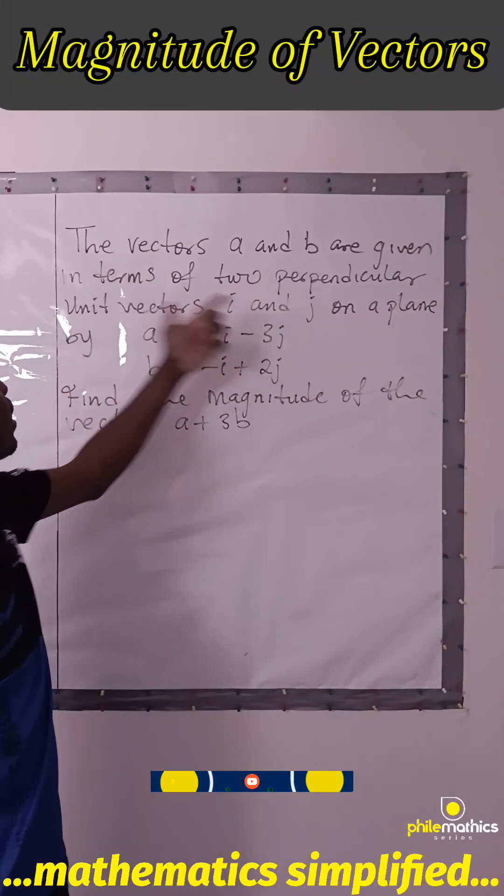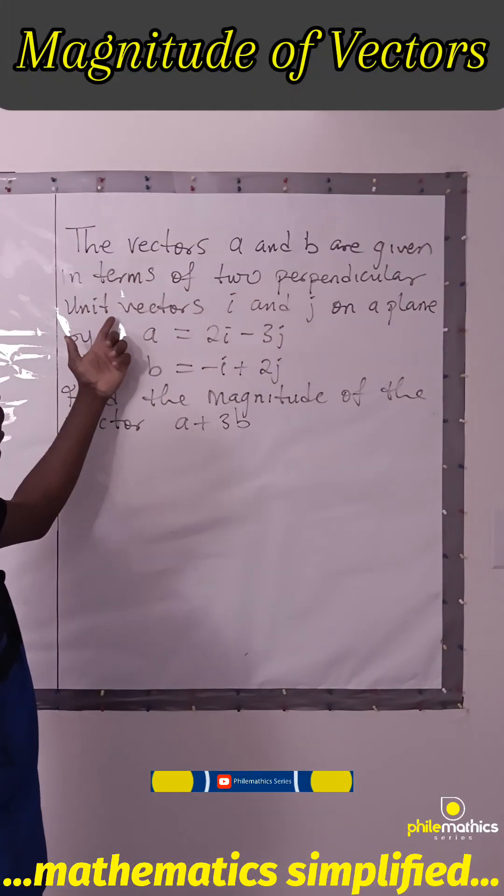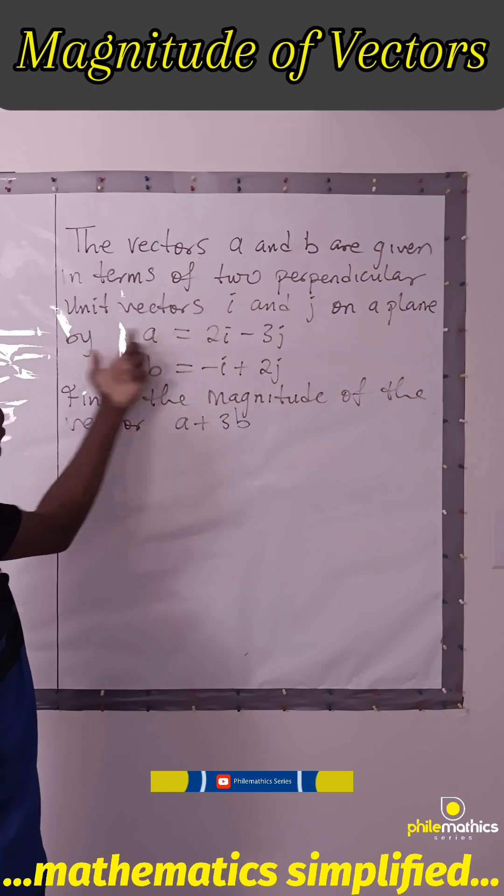The vectors A and B are given in terms of two perpendicular unit vectors, I and J, on the plane, given as this.